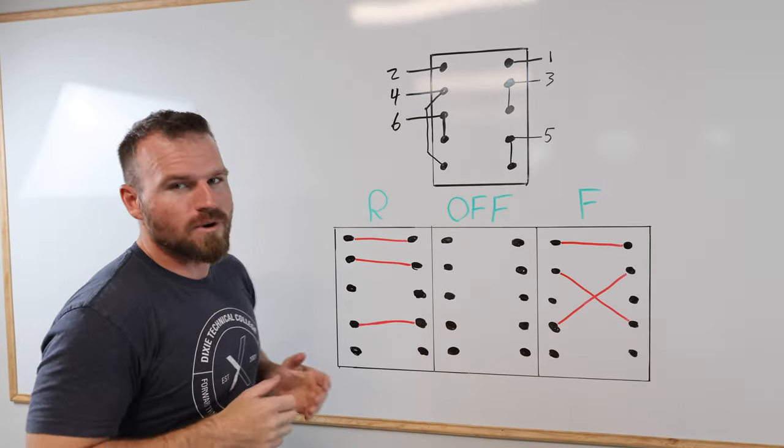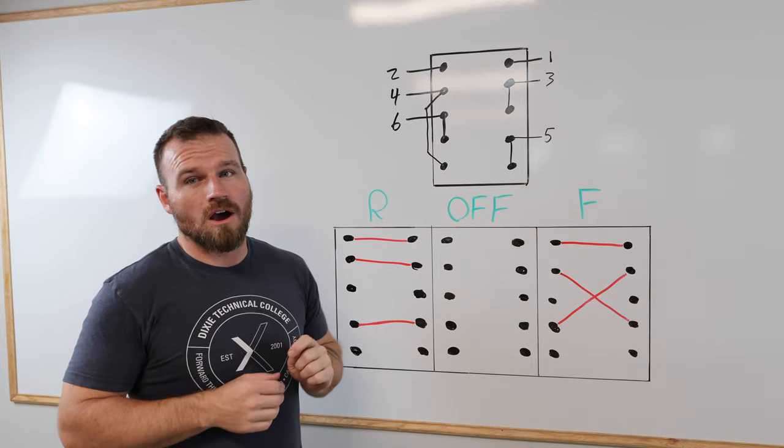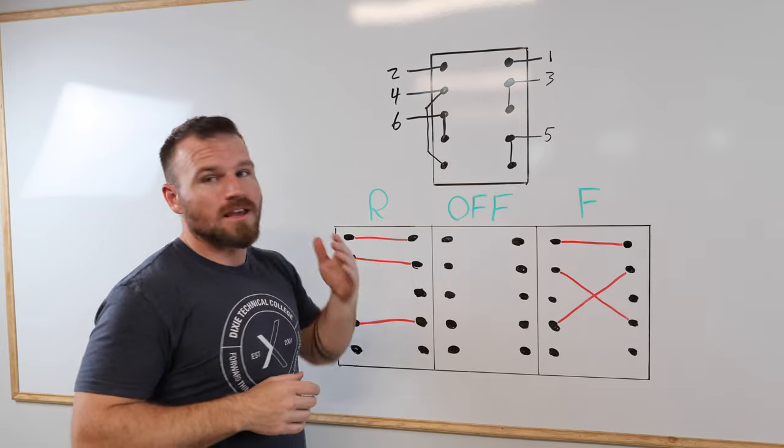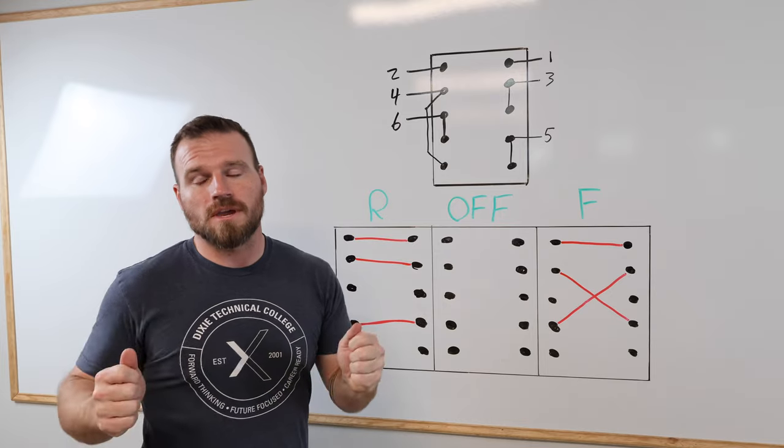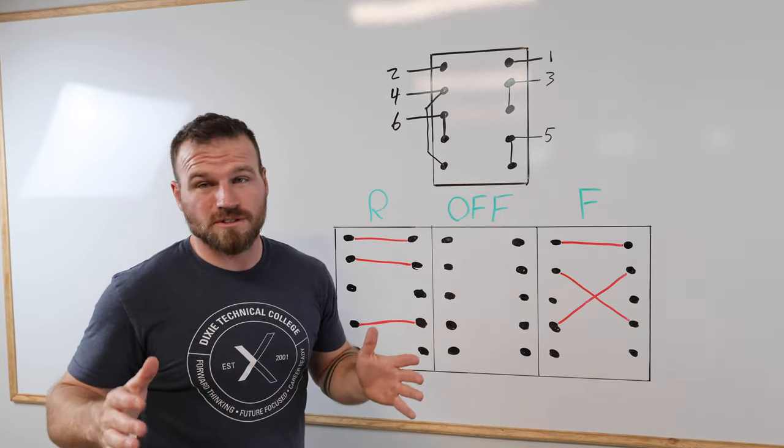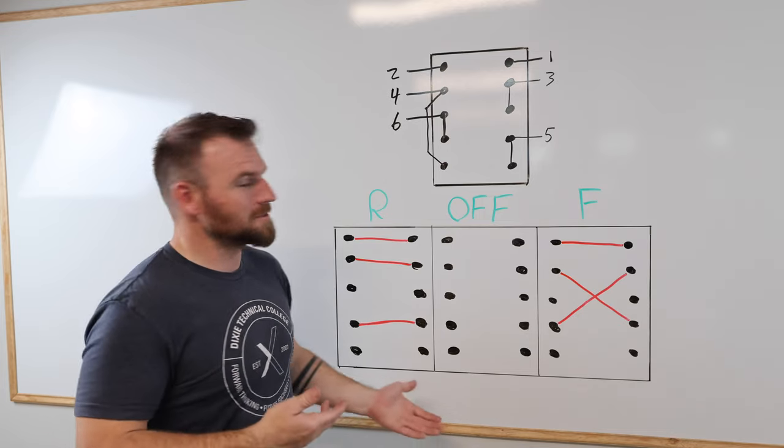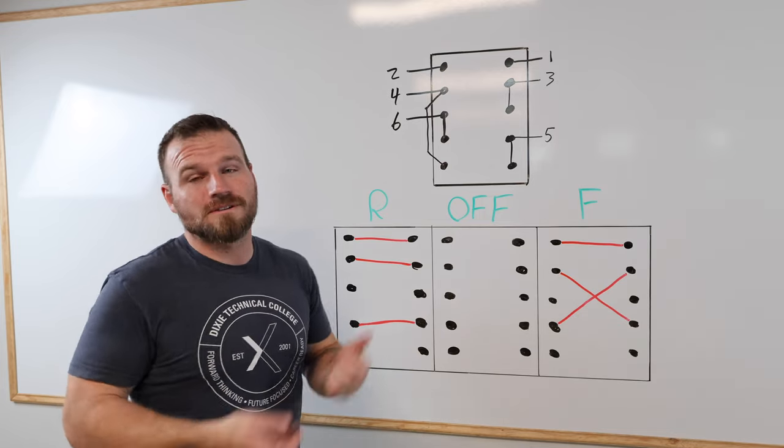Now when you order your switch, it's going to come with two different wiring diagrams. One will be on the inside of your cover, this one, and the other one will be on a little piece of paper. You can also find this wiring diagram on the internet when you Google search it. So if yours doesn't come with a piece of paper, just go ahead and Google search it, or you could test it with your multimeter just to double check.